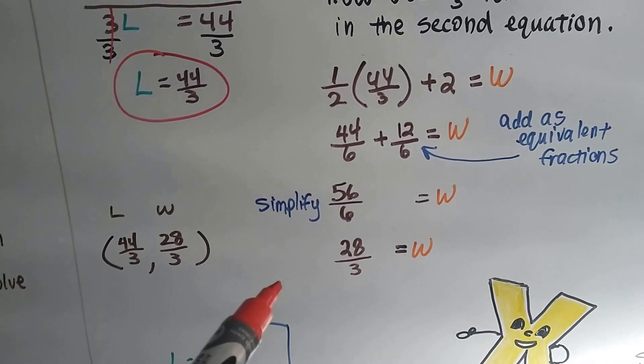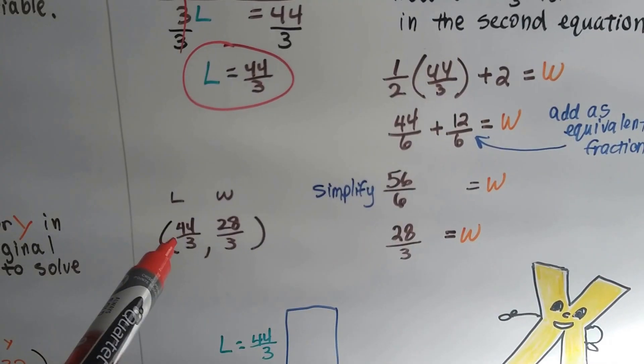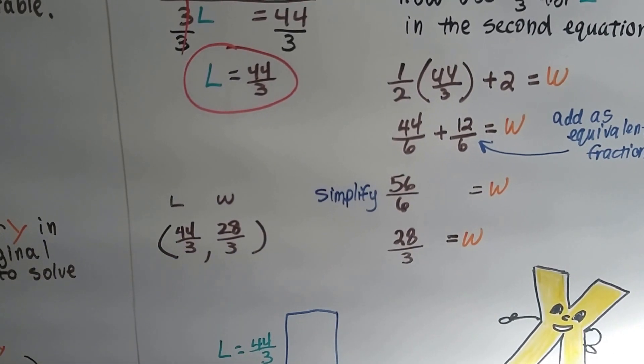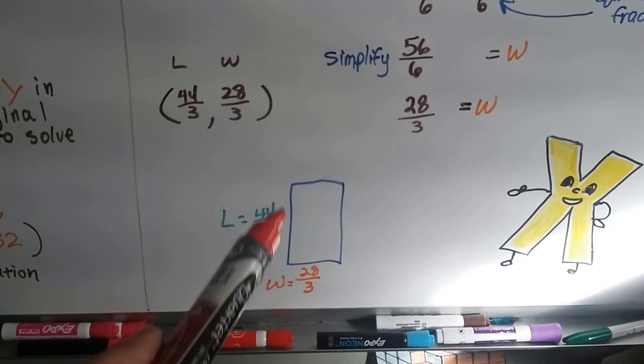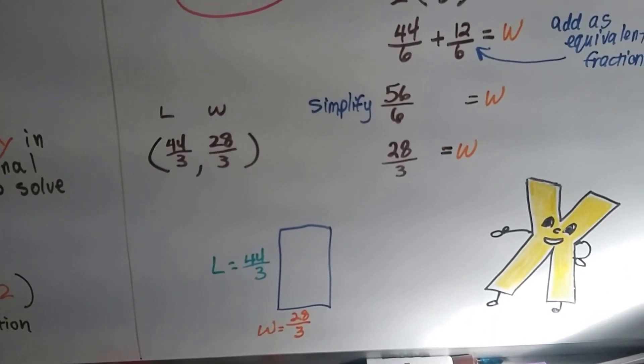So our two fractions are the length is 44 over 3 and the width is 28 over 3. That's our length. That's our width. See how we did that?